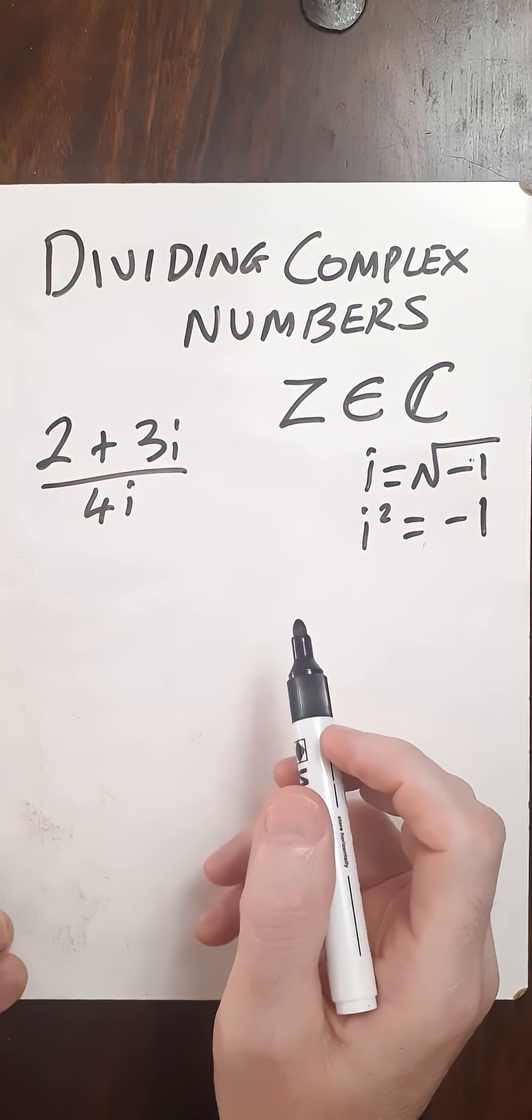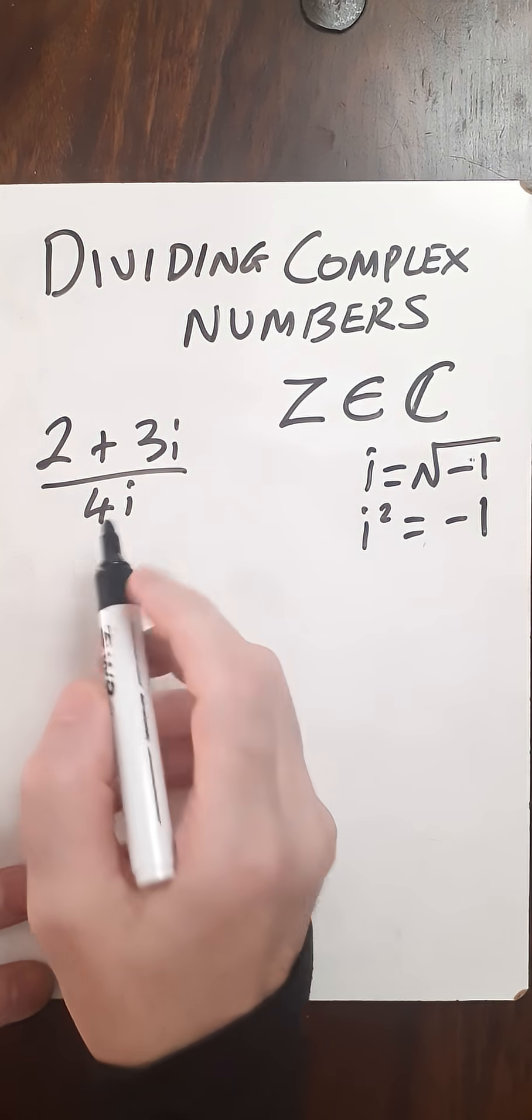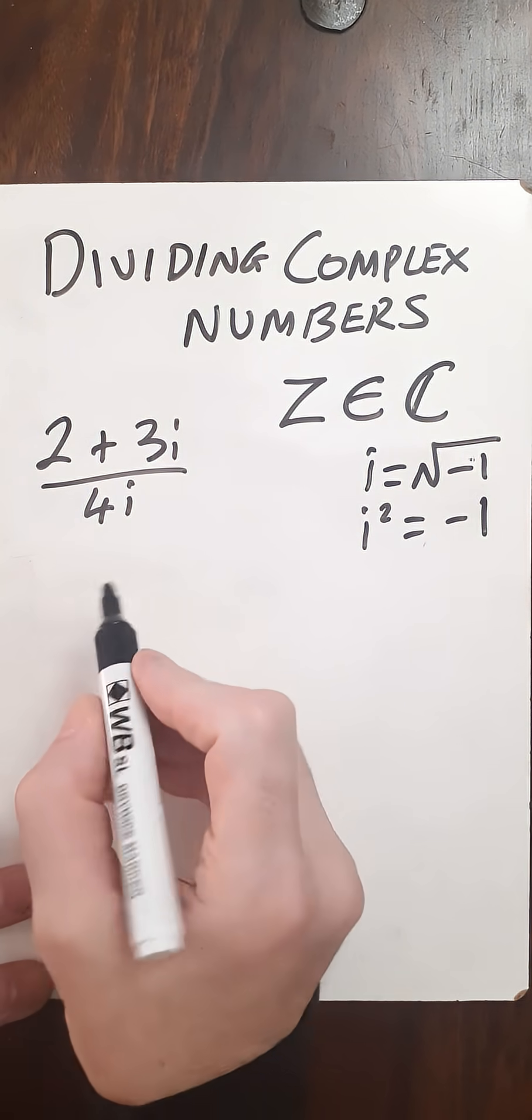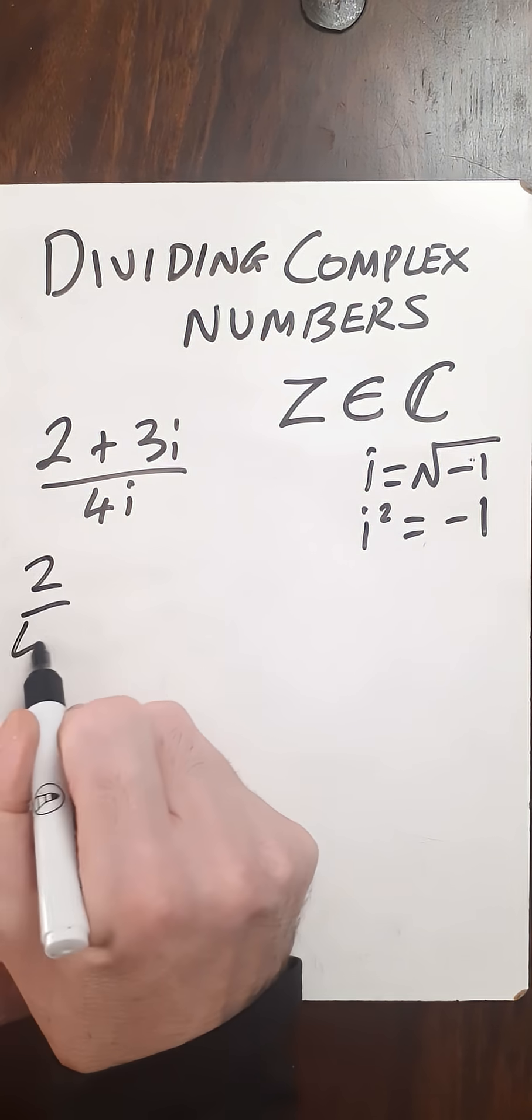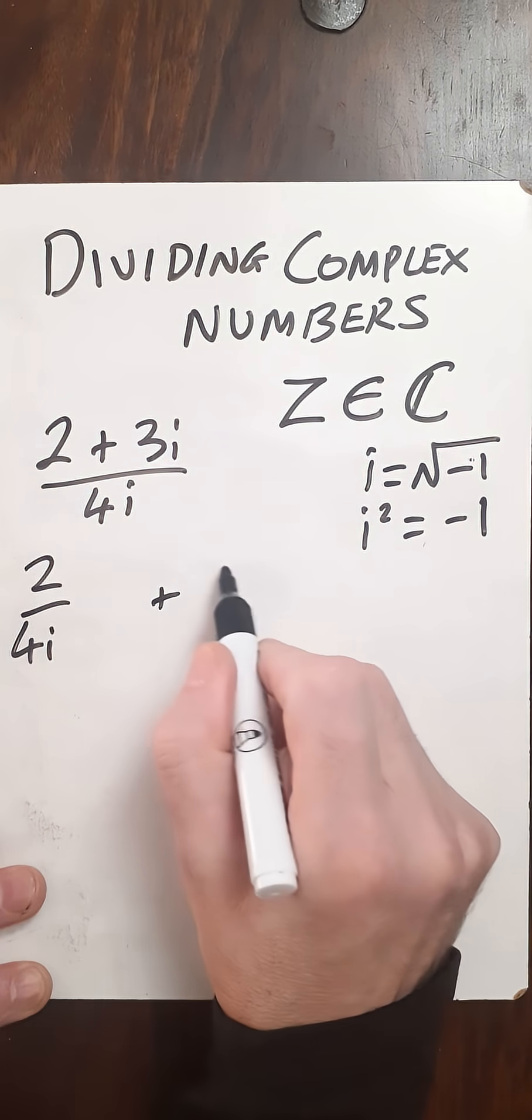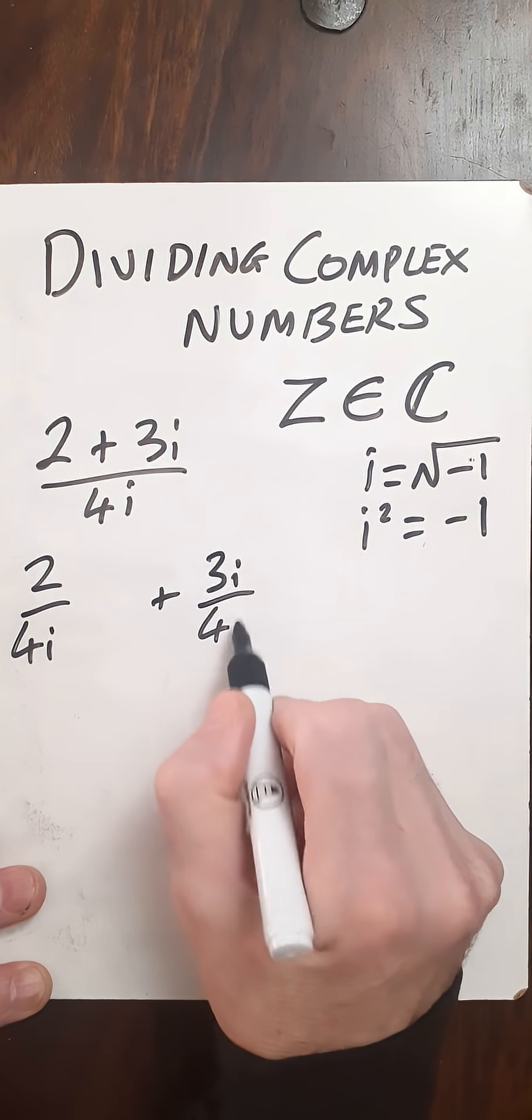So here I'm going to divide complex numbers, 2 plus 3i over 4i. First of all, split the fraction. So I've got 2 over 4i plus 3i over 4i.